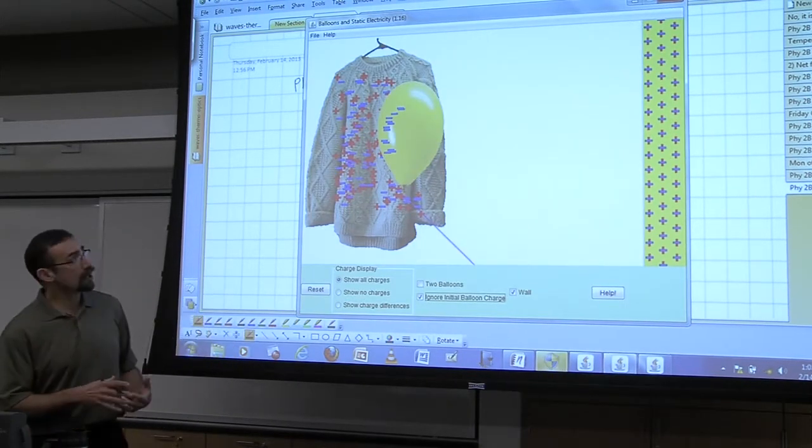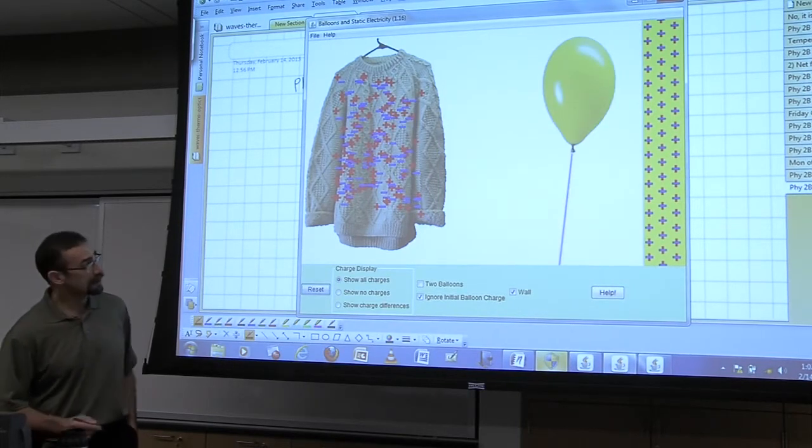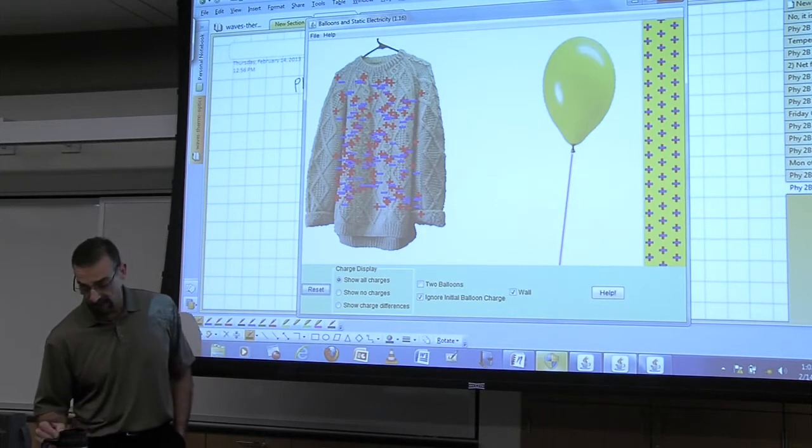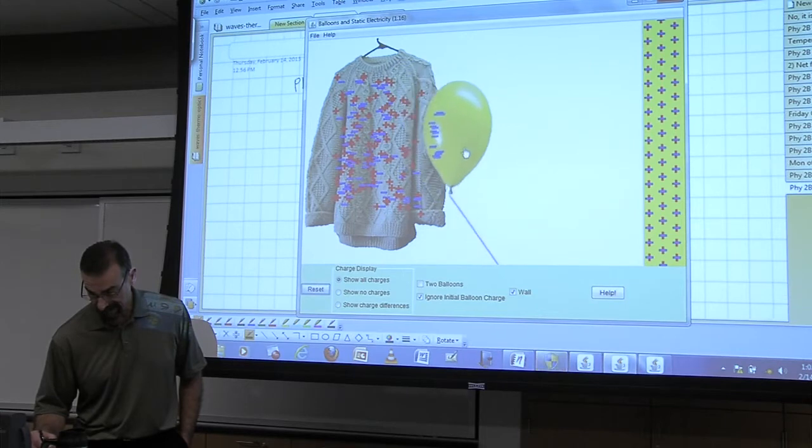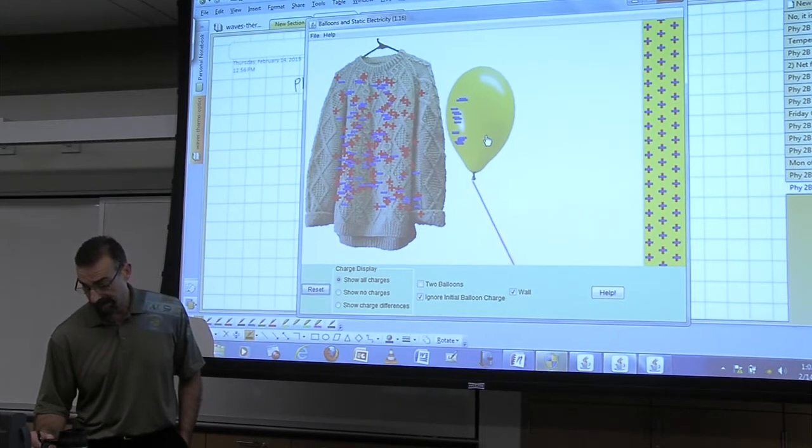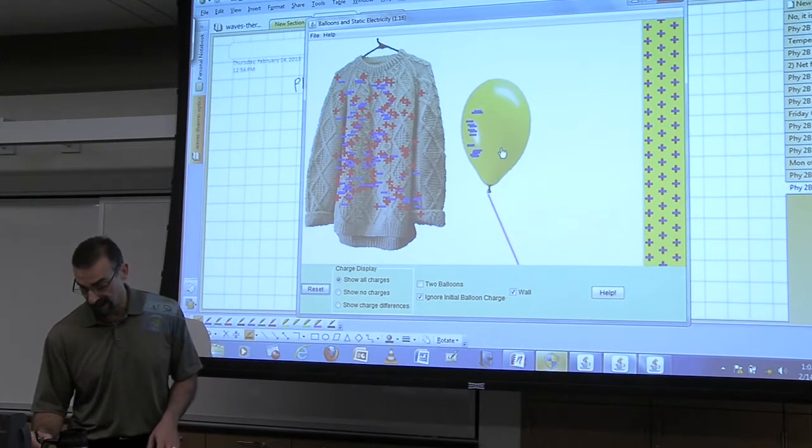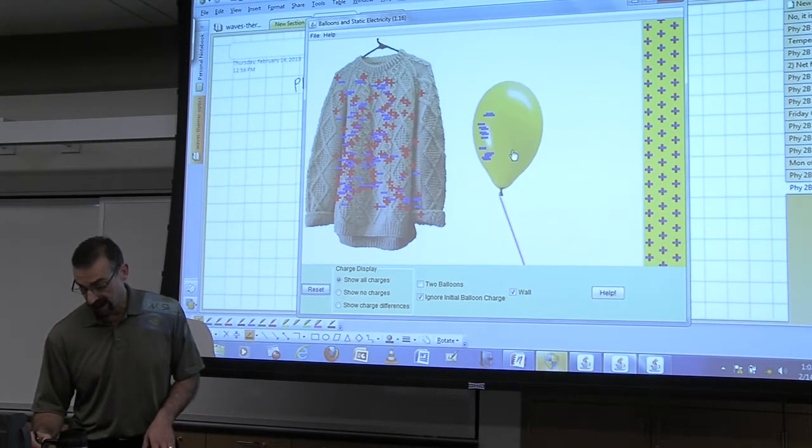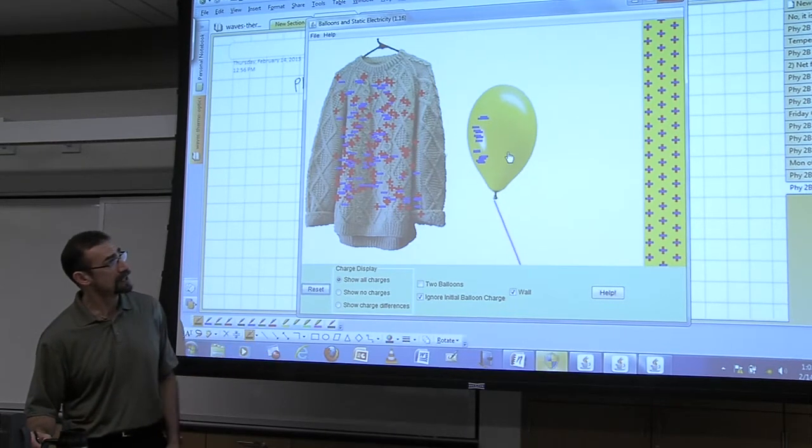Again, rubbing causes charges to transfer. So we have a balloon and a wool sweater. What happens when we rub the balloon against the wool sweater? It picks up some charge. It has a stronger affinity for the electrons than the other material of the sweater. And so now the sweater has a net positive charge. The balloon has a net negative charge.